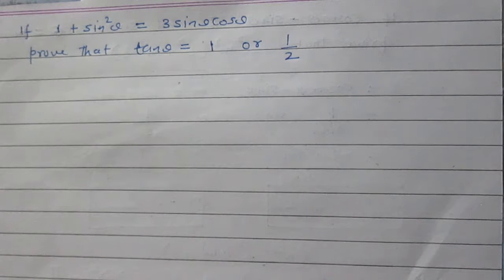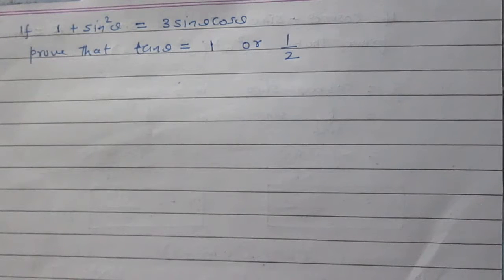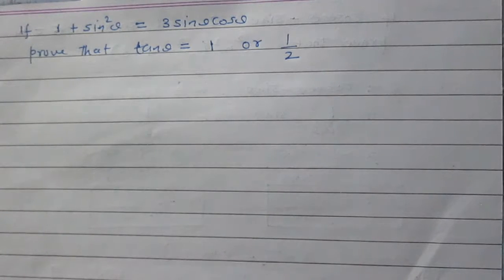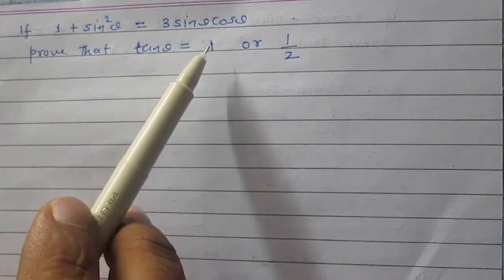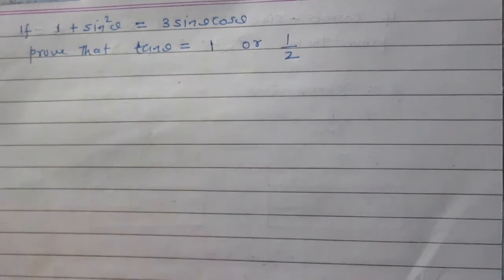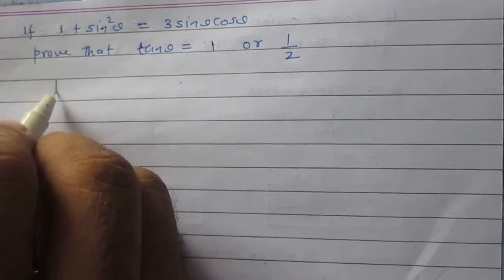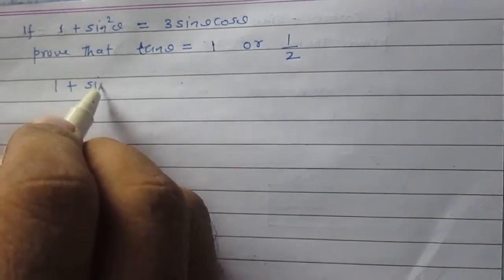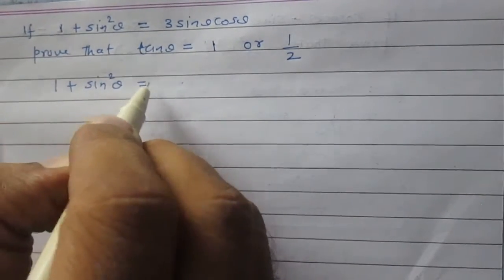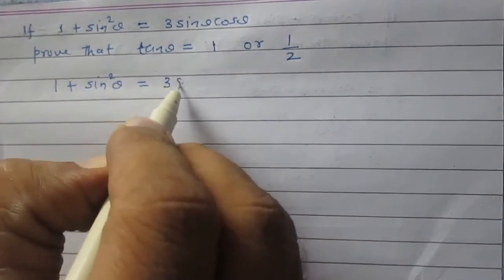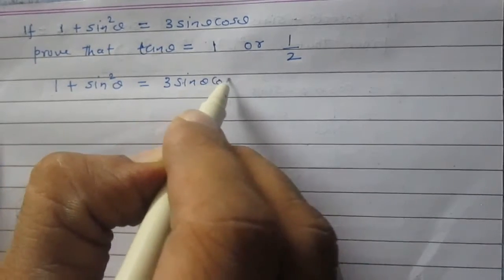If 1 plus sin squared theta is equal to thrice of sin theta multiplied by cos theta, prove that tan theta is equal to 1 or 1 by 2. We are given that 1 plus sin squared theta is equal to 3 sin theta cos theta.